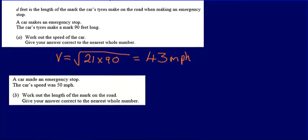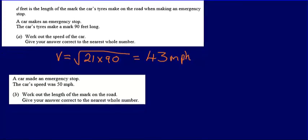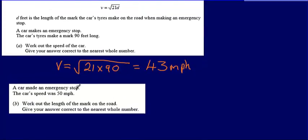Then for part b, we're told that a car made an emergency stop and the car's speed was 50 miles per hour. We're asked to work out the length of the mark on the road. This time I know what the car's speed was - that v was 50.